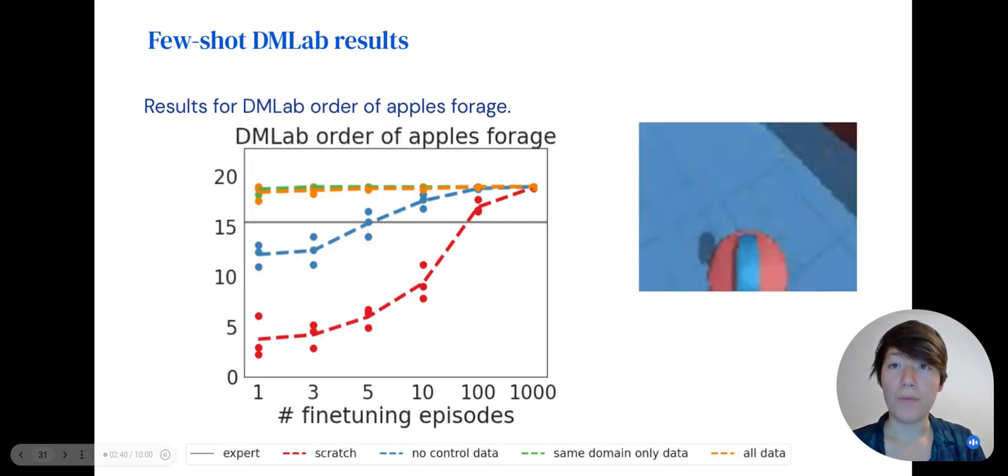The DMLAB apple foraging task includes pixel observations, so the no-control data baseline appears to learn useful visual priors for fine-tuning, but the best results come from either the same domain data or all data.